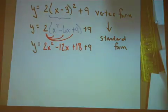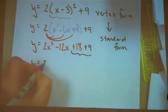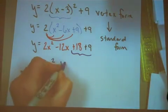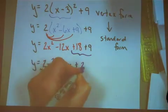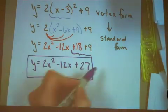And finally, you need to collect the like terms at the end, which are the 18 and the 9. Your final equation in standard form will be 2x squared minus 12x plus 27. You're now in standard form.